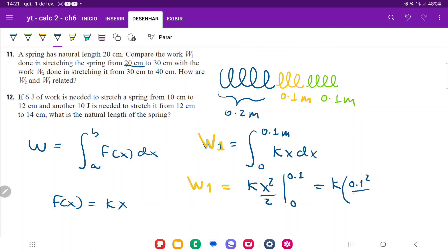If we calculate this, that's k times 0.1 squared divided by 2, minus the lower boundary which is 0. If we plug this into our calculator, 0.1 squared divided by 2 is 1 over 200 times k. This is the value for W1.